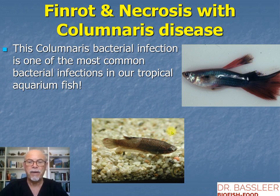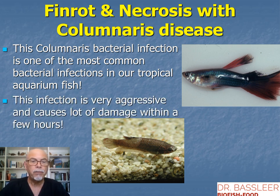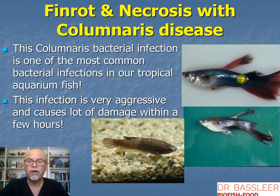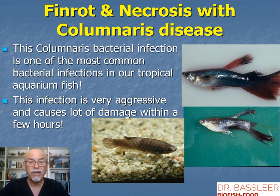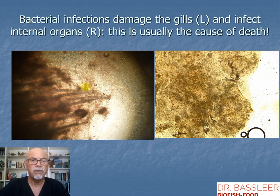Here the betta with a white mouth and a white saddle — a very common bacterial infection in tropical fish, because that bacteria loves tropical water. The problem is that this infection is very aggressive and causes a lot of damage within a few hours. Here is the same guppy after 12 hours — it has lost all its colors and nearly lost completely its tail and dorsal fin. That's the problem with columnaris disease: it advances very quickly. It also damages the gills — you see a lot of bacteria invaded and destroyed the gills, and also invaded the internal organs — and this is what usually causes the fish to die.